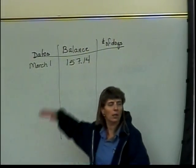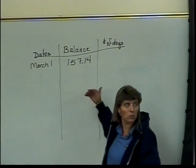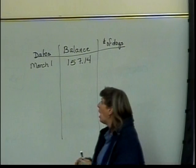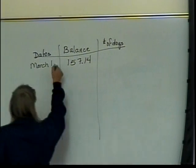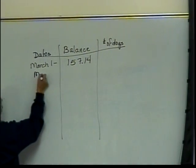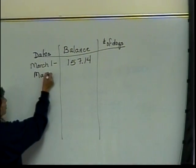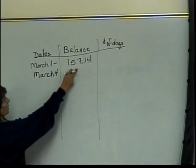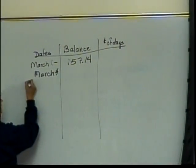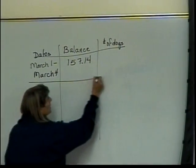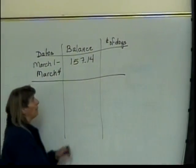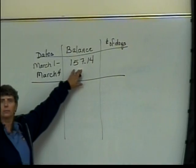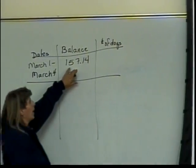Instead of making a separate row for each of March 1, 2, 3, and 4, I will say starting with March 1 and going through March 4, this is her balance. How many days did that balance last? Four days.